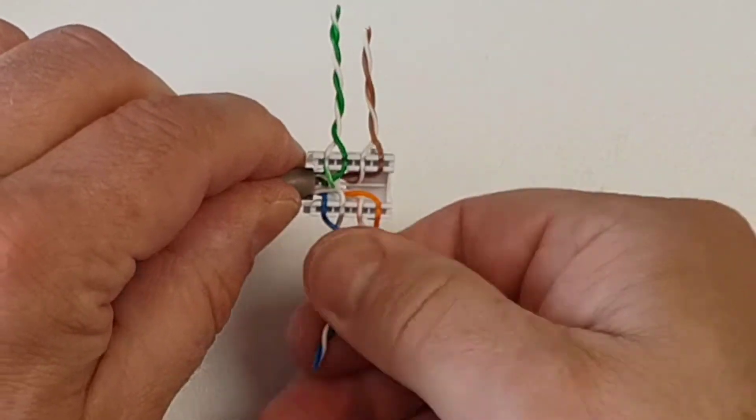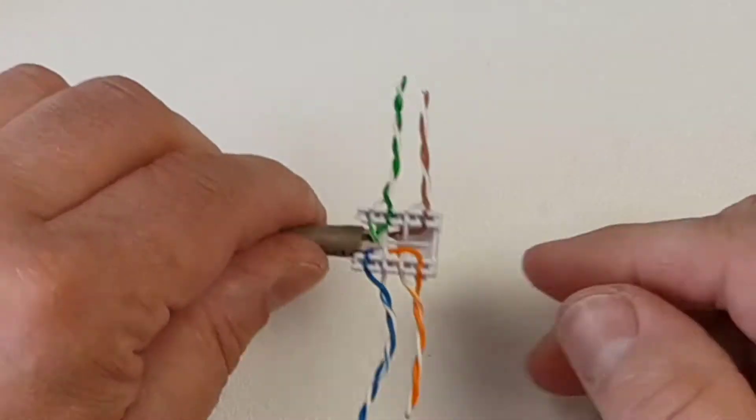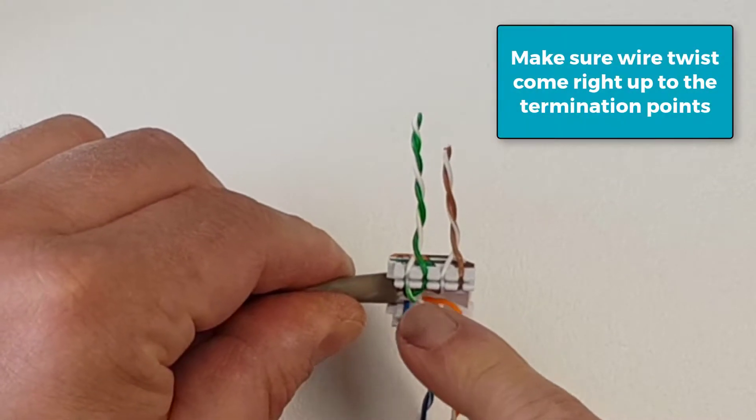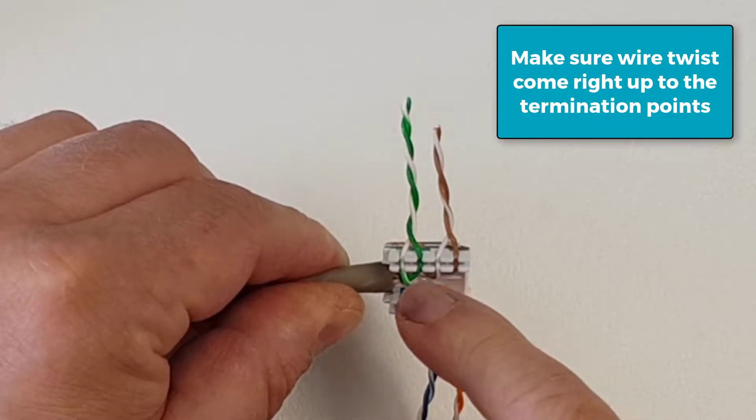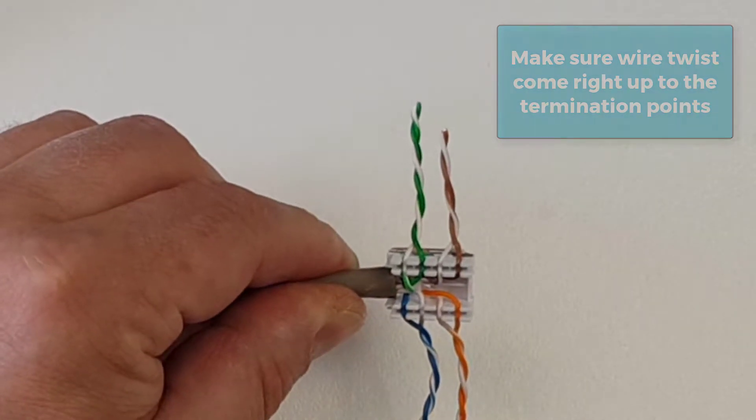So I am ready now to cut those off level with the cutters, just making sure that we have got our twists. You can see here that our twists are coming right up to our termination points.